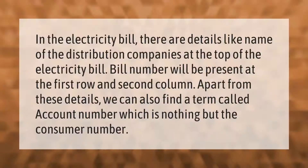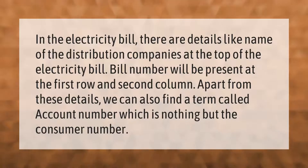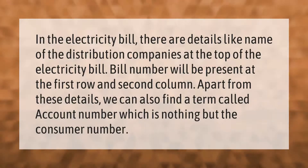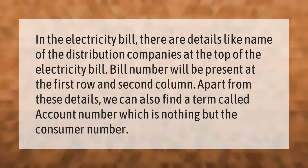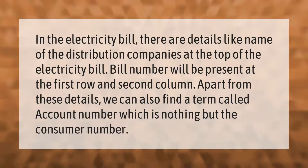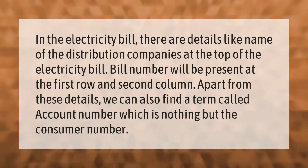In the electricity bill, there are details like the name of the distribution companies at the top of the bill. The bill number will be present at the first row and second column. Apart from these details, we can also find a term called account number, which is nothing but the consumer number.